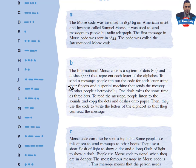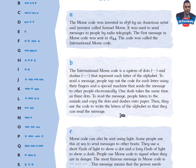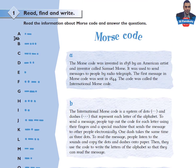Part B. The International Morse code is a system of dots and dashes that represent each letter of the alphabet. To send a message, people tap out the code for each letter using their fingers and a special machine that sends the message to other people electronically. One dash takes the same time as three dots. To read the message, people listen to the sounds and copy the dots and dashes onto paper, then use the code to write the letters of the alphabet so that they can read the message. For example, A is a dot and a dash; B is a dash and three dots, and so on.